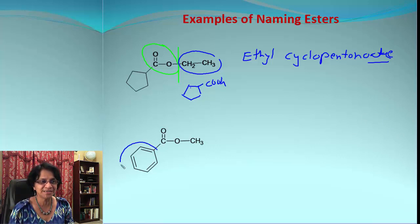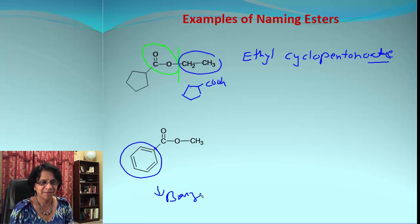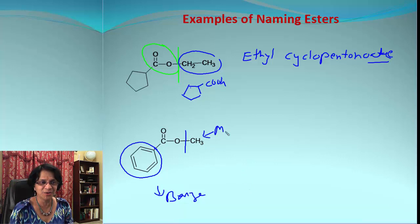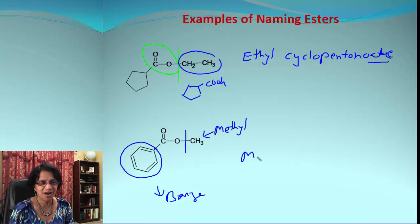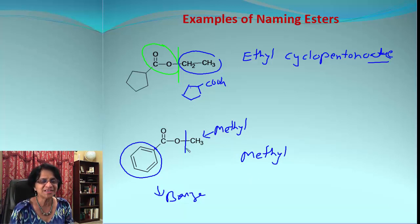Let's take one more example. That is a benzene ring, and we're going to split that into two parts. The alkyl group here is a methyl group, so our naming begins with methyl.